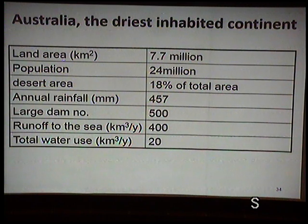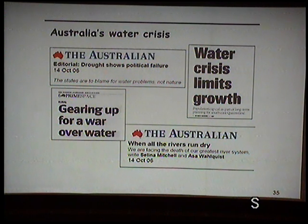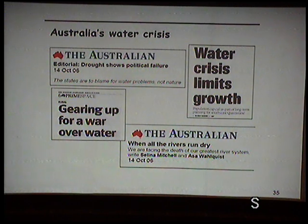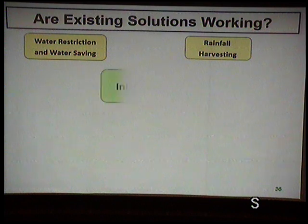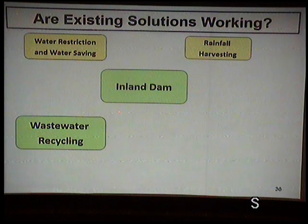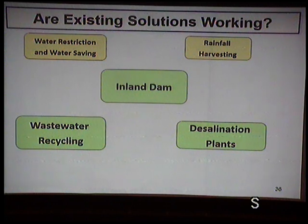Australia is the driest continent and is very open to new solutions. The Australian government tried building more inland dams — but no new dams have been built for capital cities since 1990. They also tried wastewater recycling plants and desalination. The government spent a billion dollars on these experiments, but unfortunately all of them were not successful.